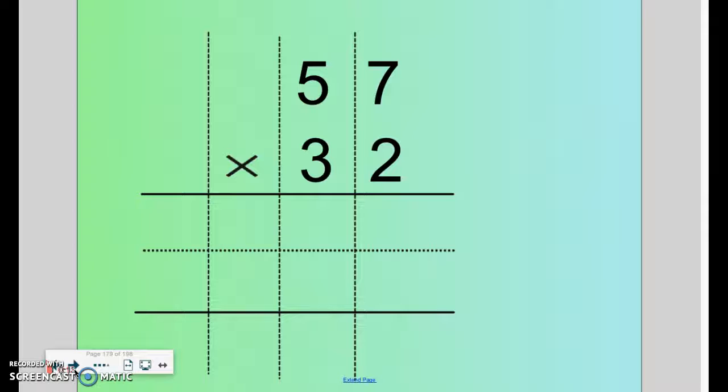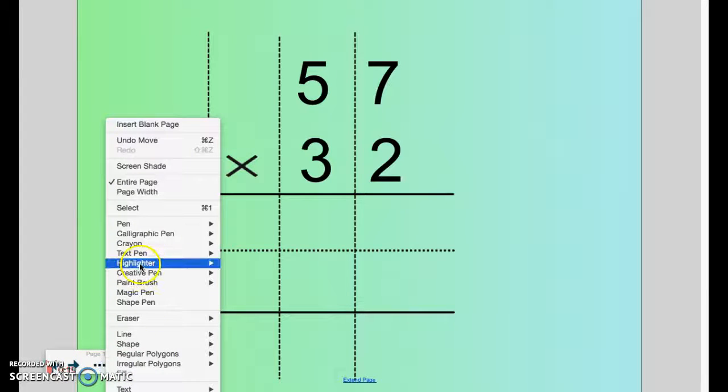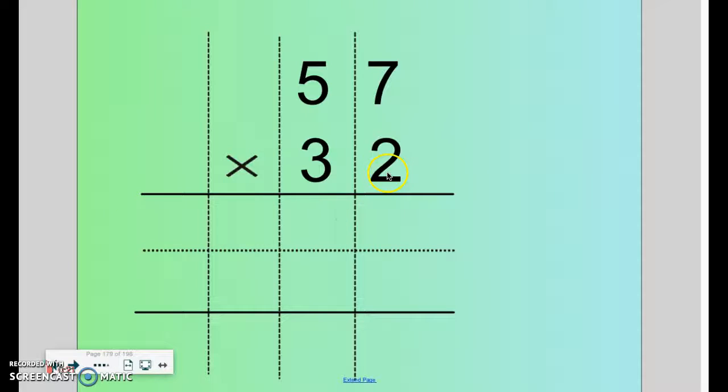For the two factors 57 times 32, we have larger numbers and we have to carry more numbers. Watch as I solve this problem.